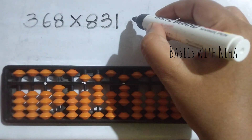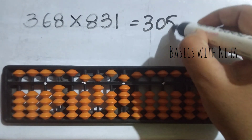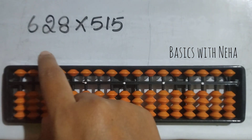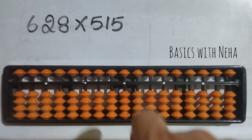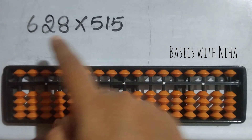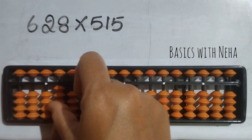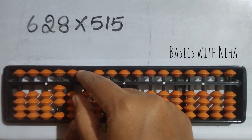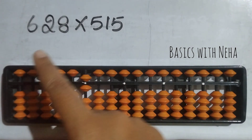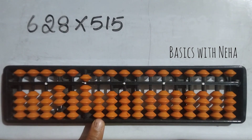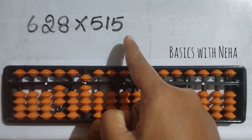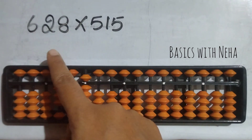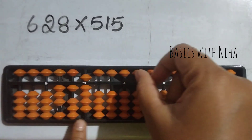The third question — there are six numbers, start from the sixth rod. 6 fives are 30 — three zero. 6 ones are 6 — zero six. 6 fives are 30 — again three zero. Now do 2 into 515 — start from the fifth rod. 2 fives are 10 — one zero.